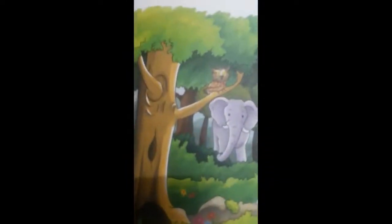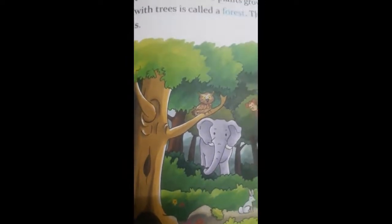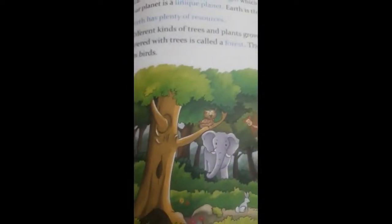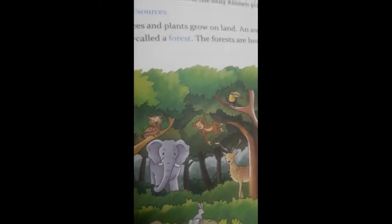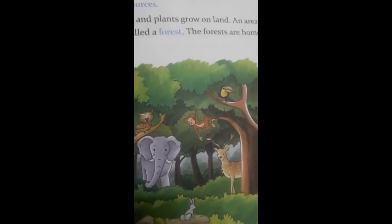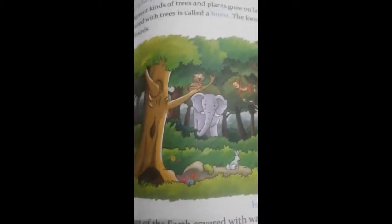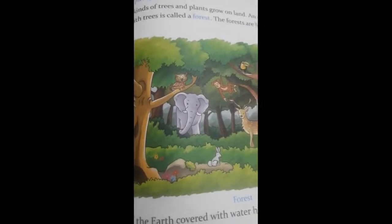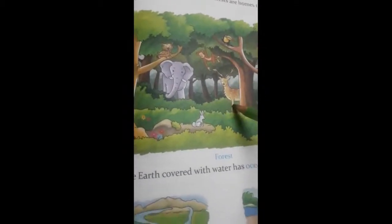And children, Earth has plenty of resources. Different kinds of trees and plants grow on land. Thickly covered area with trees are called forests. Forests are home to many animals and birds. Now you can see in this picture, this is picture of forest.